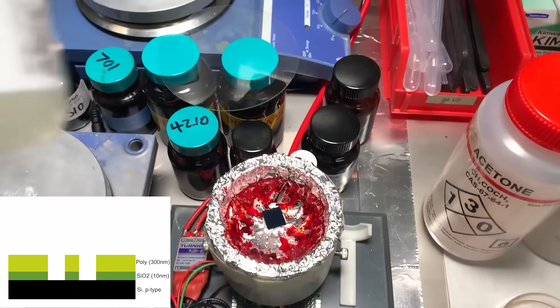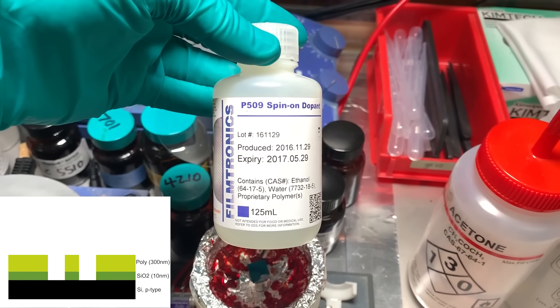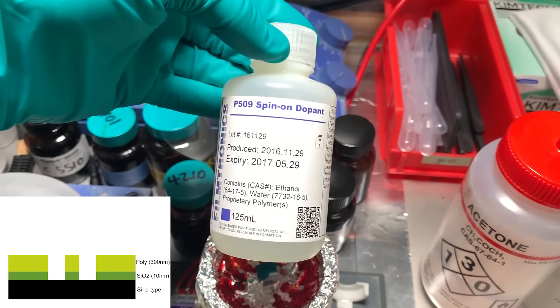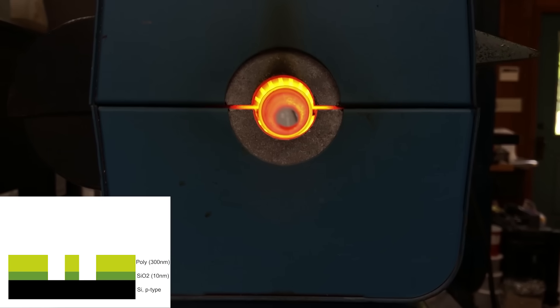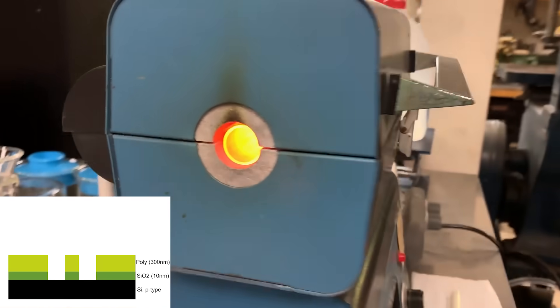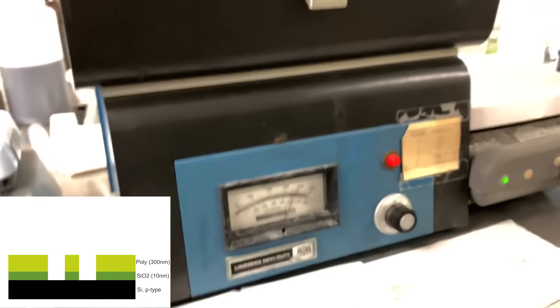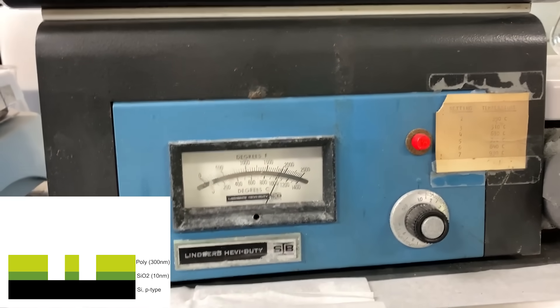The wafer's then cleaned and dried, and we spin on a dopant. This is a phosphorous solution that's suspended in a liquid silicon dioxide. This is spun on just like the photoresist, and then we bake it at very high temperature, over 1,000 degrees C,